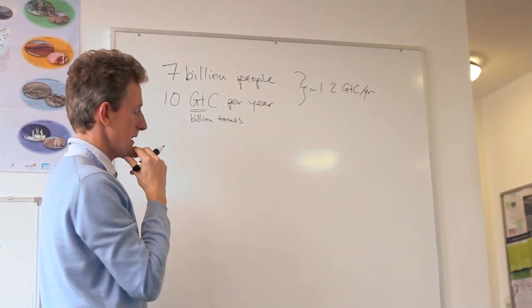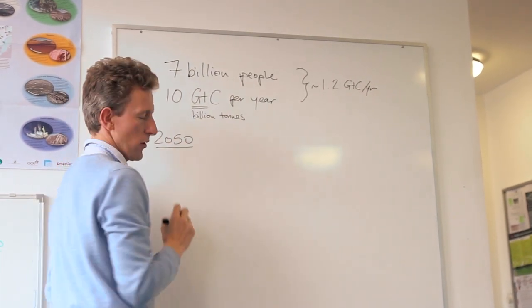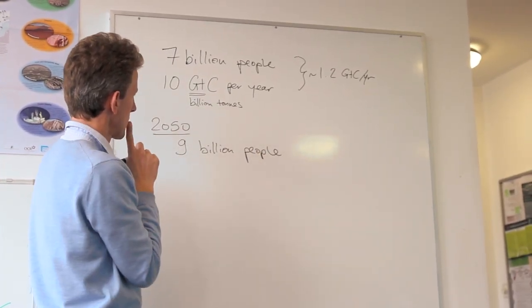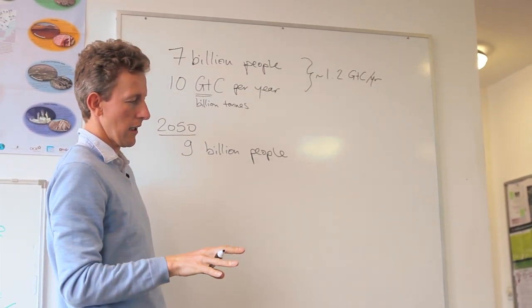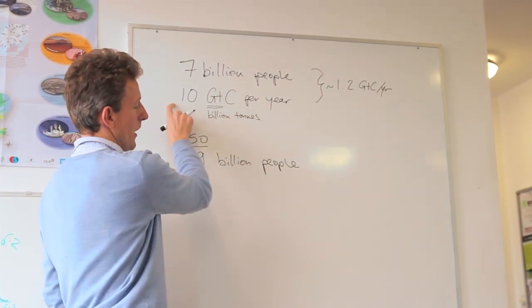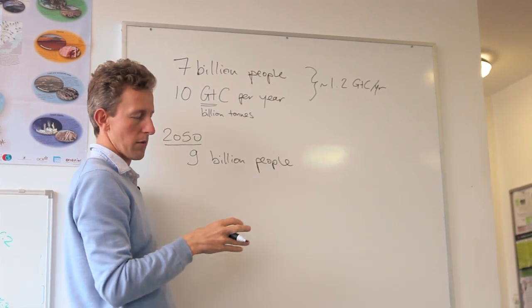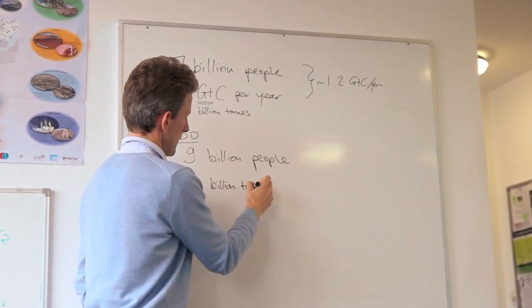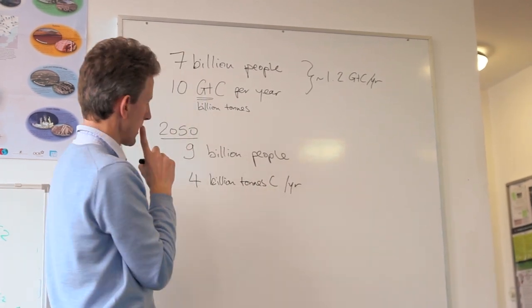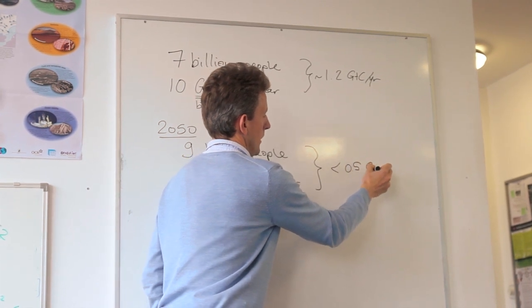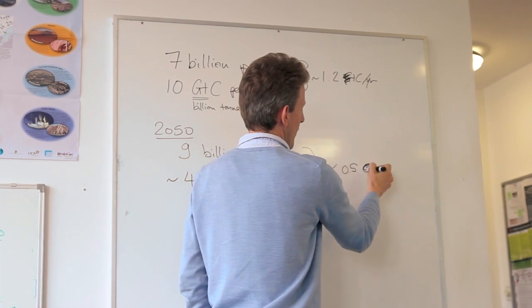Looking ahead to 2050, there's going to be more of us - pretty unavoidably about 9 billion people. What we'd really like to achieve, if we want to stabilise climate change and keep it within two degrees of warming from pre-industrial, means we need to more than halve carbon emissions from what they are now - about a 60% reduction, getting down to around 4 billion tons of carbon per year. So each person on average needs to get down to less than half a tonne of carbon per year.